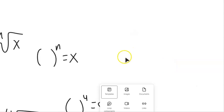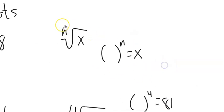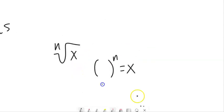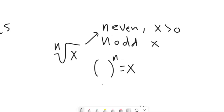So if I have this nth root of x, if n is even, x has to be positive. If n is odd, x can be anything.